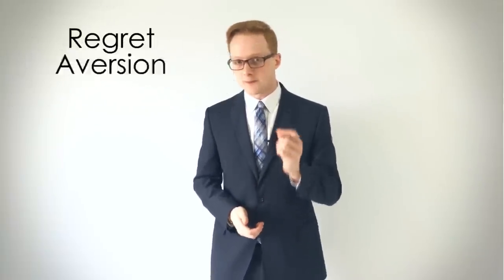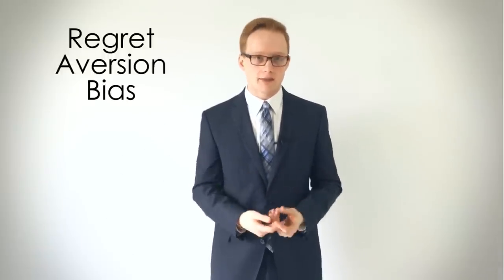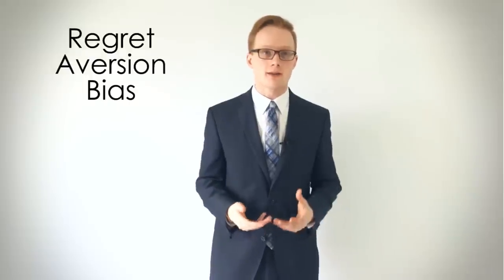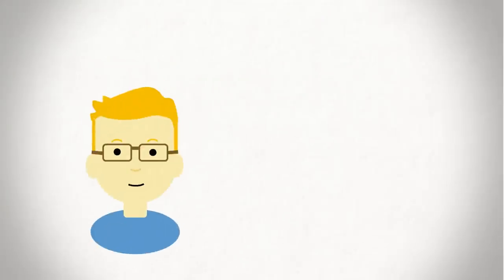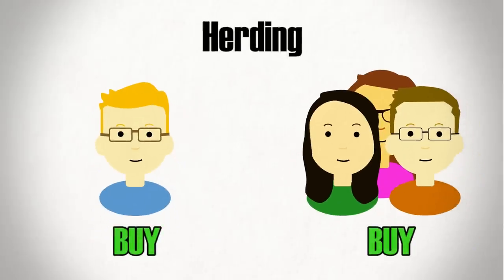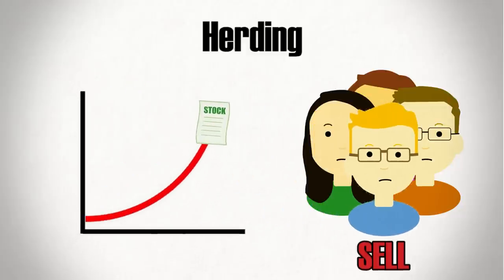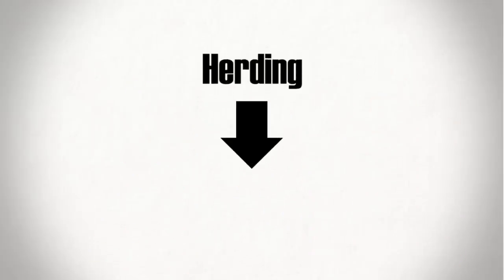But possibly the most important bias to understand for investors is the regret aversion bias. Simply put, people never want to regret a decision they've made, and as such they tend to conform with what others do. This has been theorized to lead to what's known in finance as herding, where people buy into industries that others are buying and sell industries where others are selling, regardless of whether it is a good time to do so or not.